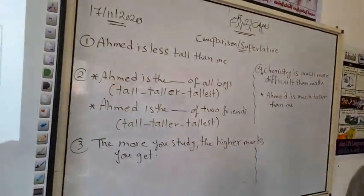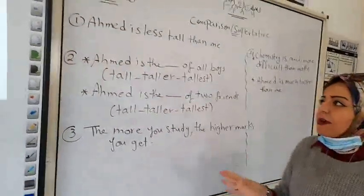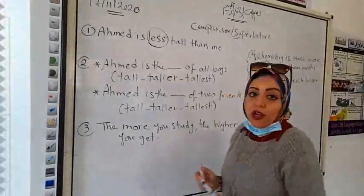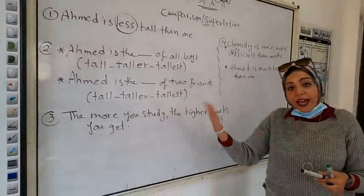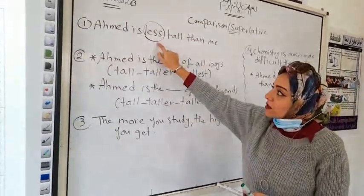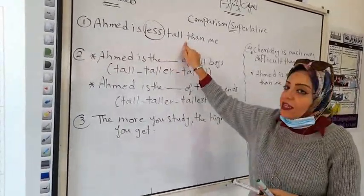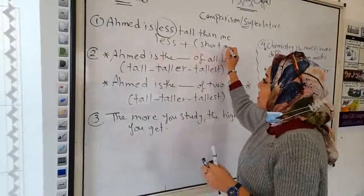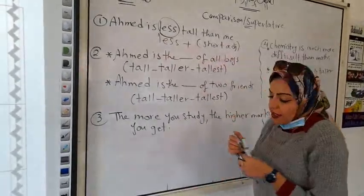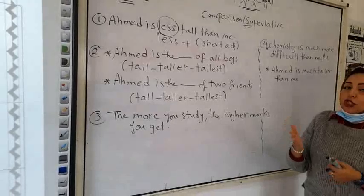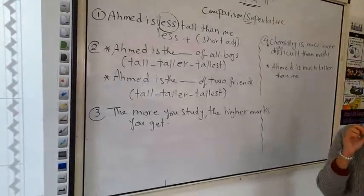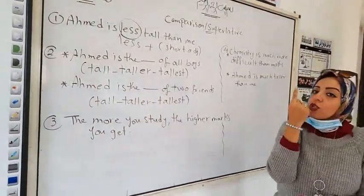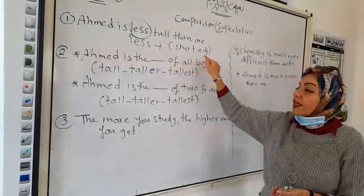How come? Let's look here. Well, number one here, if I say Ahmed is less tall than me. Basically, by the way, we said before, if I'm going to use less, senior two, less for the long adjective. If I want to make comparison, I say more or less plus my long adjective. But how come I use less with a short adjective? Yes, you can do this. We can add less only, not more. Less plus a short adjective. That's exception number one.